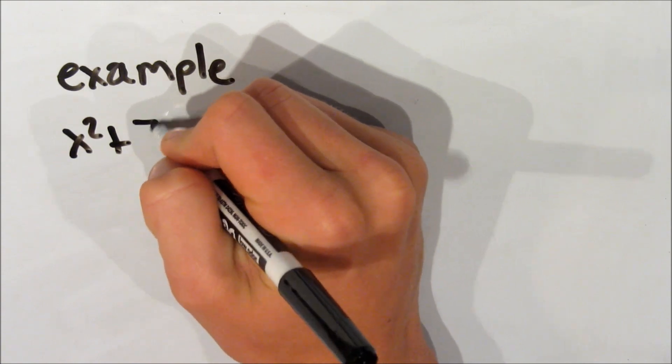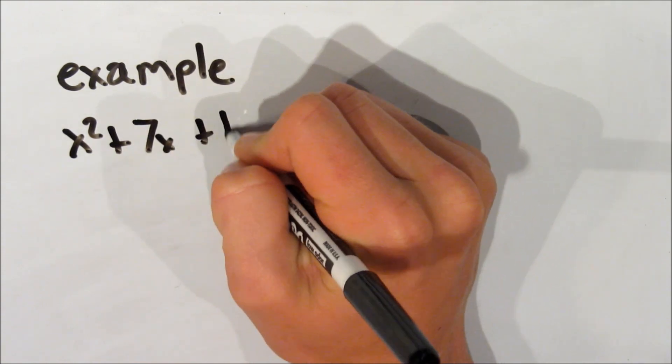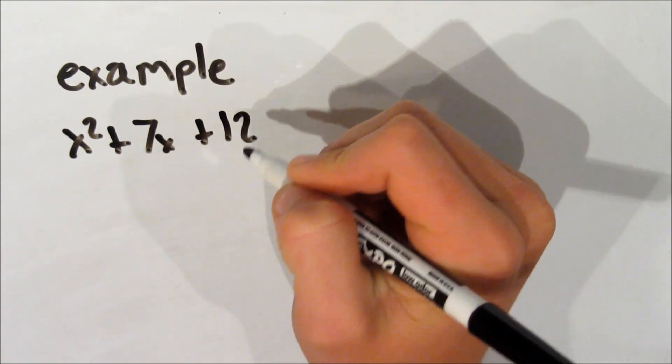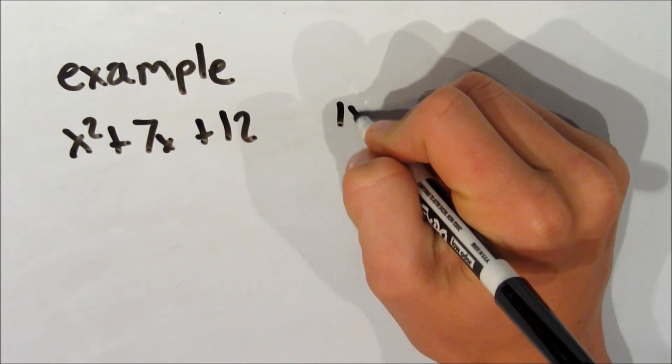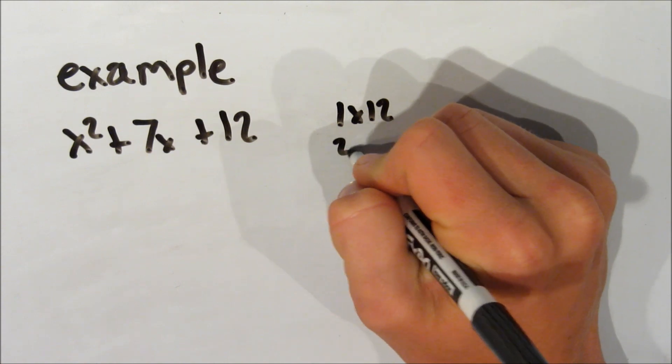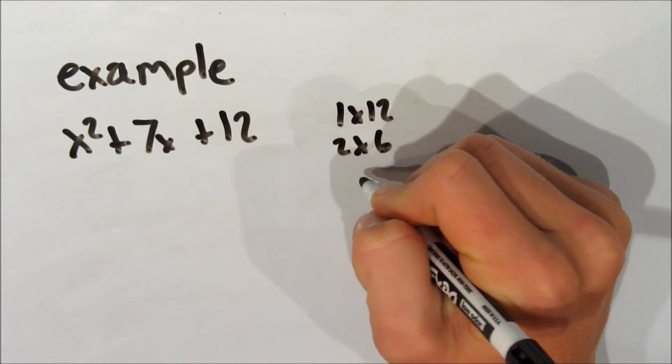Alright, now that you've got that done, let's jump in and do a little more difficult of an example. So let's take this one. So x squared plus 7x plus 12. So we've got to know that the first thing you always have to do is look at the factors of 12.